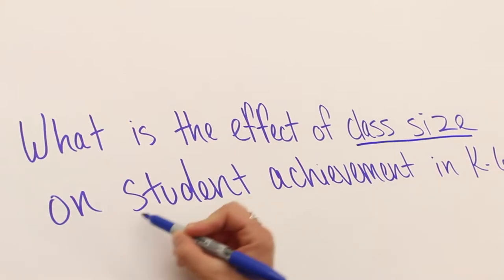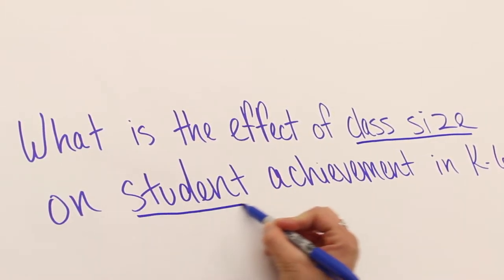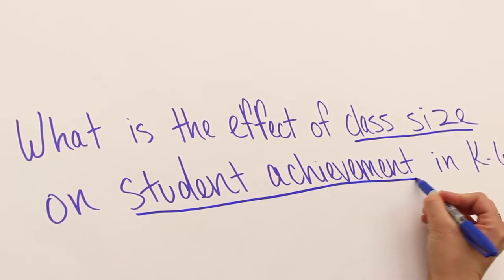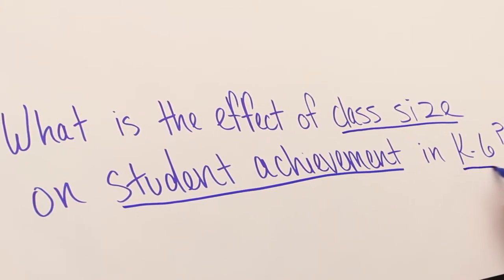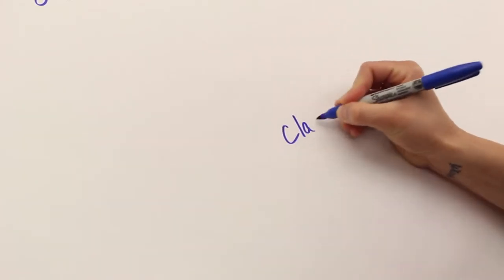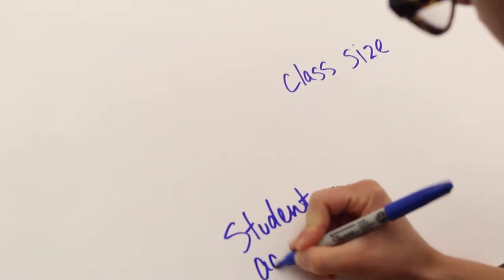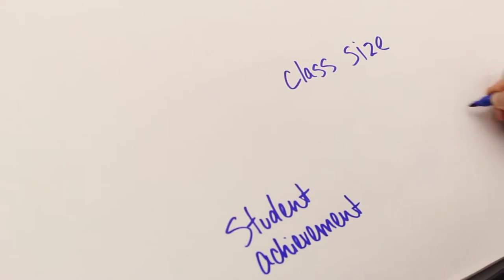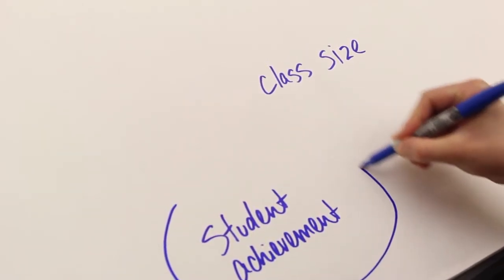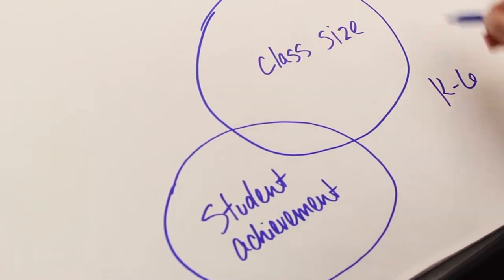Then underline the key concepts, so in this case, the research would underline class size, student achievement, and K-6. Next, think of those concepts as the circles of a Venn diagram. You as the researcher want to find the articles that touch on all three topics. You want the articles where all three circles connect.